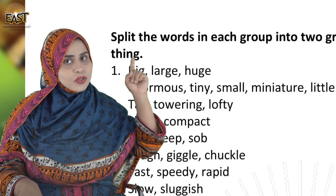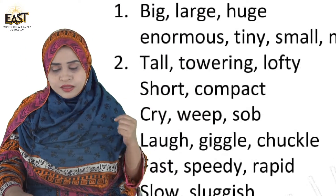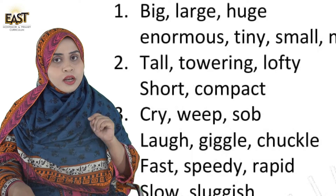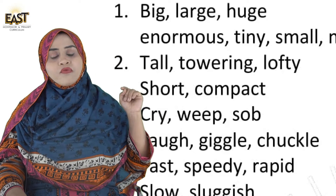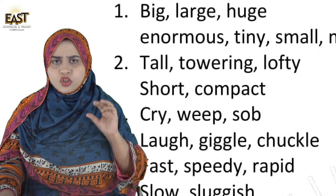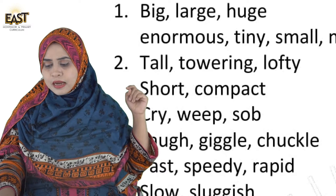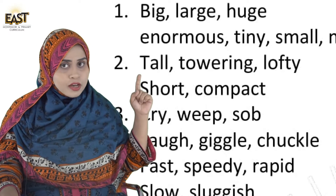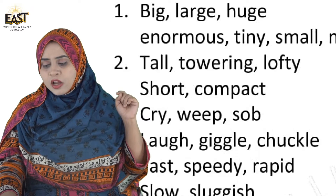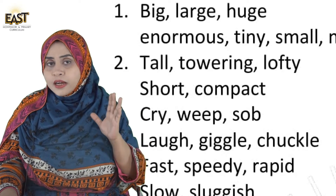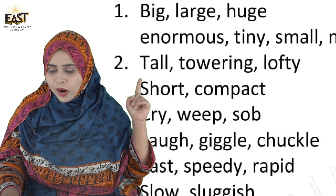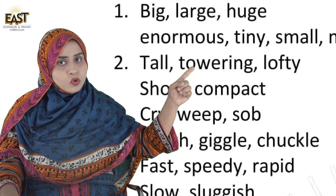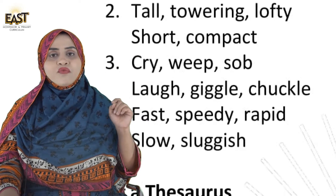Now the second line. We have 'Tall' — yani lamba — so write it in Group 1. Then 'Short' — chota — so write it in Group 2. Next is 'Towering', which means high, yani lamba, so it goes into Group 1 with tall. Then 'Lofty', which means ooncha, so it goes into Group 1 with tall. And 'Compact' means small/shrink hona, so write it in Group 2 with short.